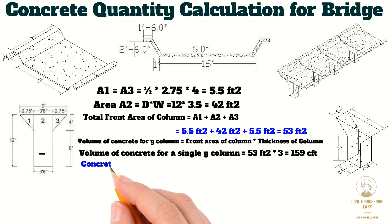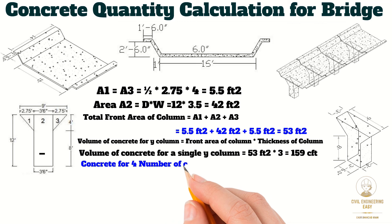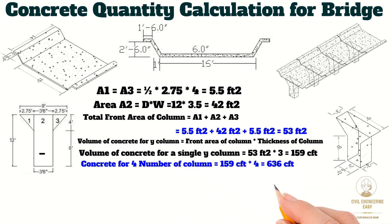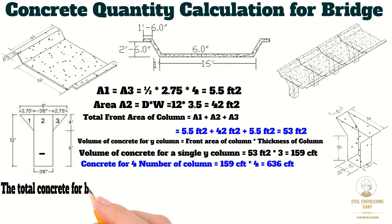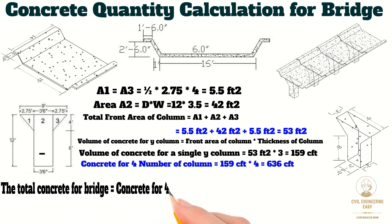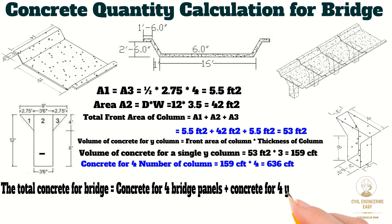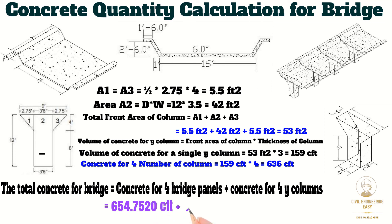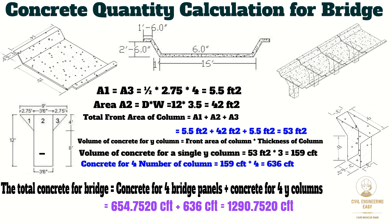The volume of a single Y column is 159 cubic feet. For 4 Y columns: 4 × 159 = 636 cubic feet. The total concrete for the bridge equals concrete for 4 bridge panels plus concrete for 4 Y columns: 654.752 + 636 = 1290.752 cubic feet. That was all about the volume concrete calculation for a bridge.